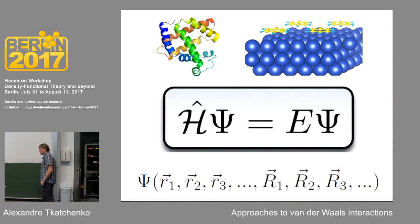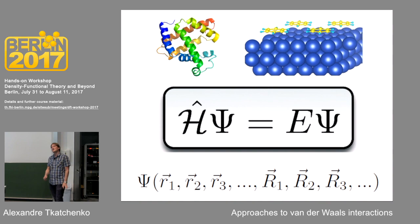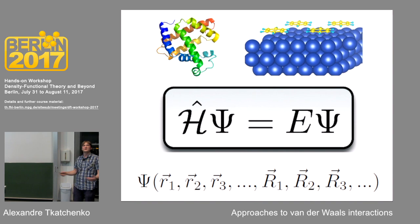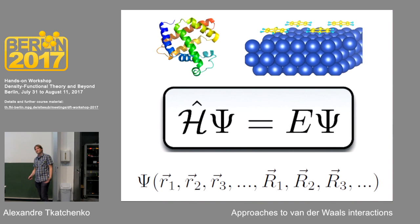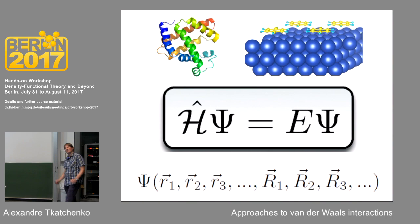Going beyond dimers to calculate van der Waals interactions for large proteins or molecules on surfaces, we need in principle to solve the Schrödinger equation exactly, since van der Waals interactions involve many electrons interacting over all relevant length scales — tens of nanometers. We need the wave function for all electronic and nuclear degrees of freedom. In reality we apply the Born-Oppenheimer approximation and focus on the electronic wave function, since nuclear polarization is much smaller, but we still need additional approximations.